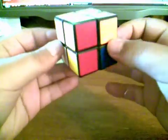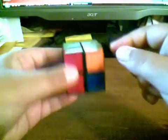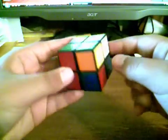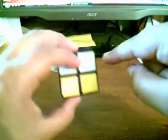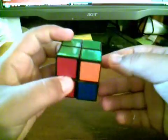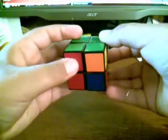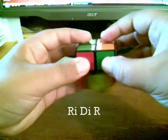Now if you mistakenly misplace two corners, it's simple to switch them. So for instance, this corner here is flipped with this corner. So simply what you do is take the corner out. You do R-I-D-I-R.